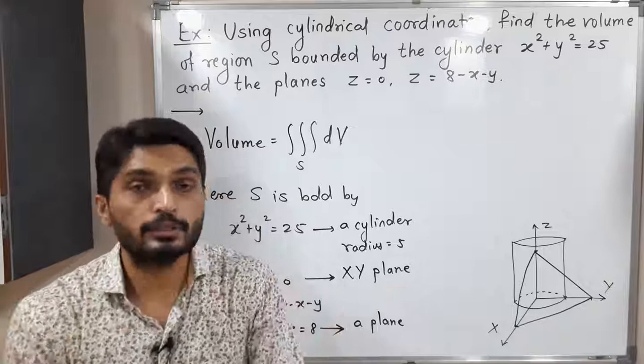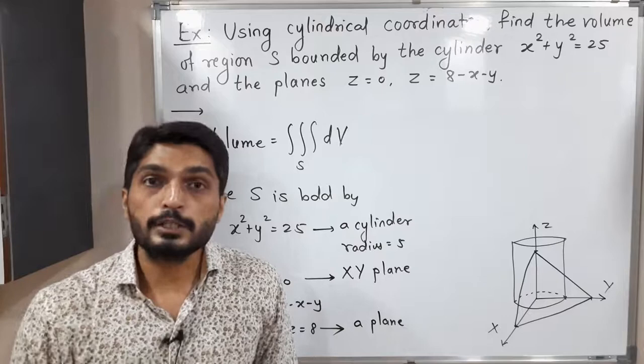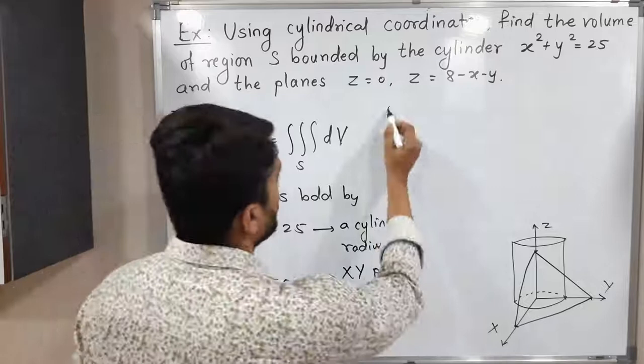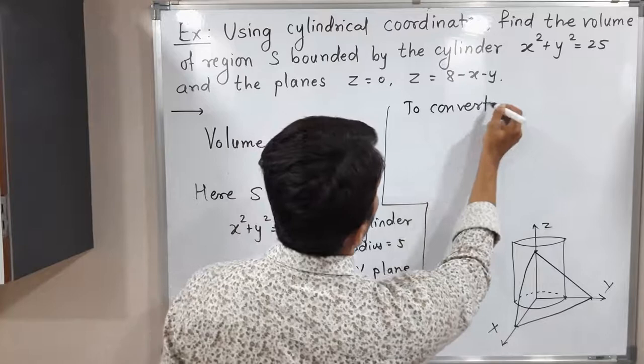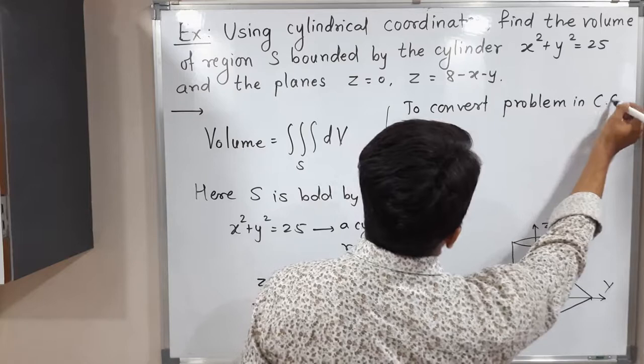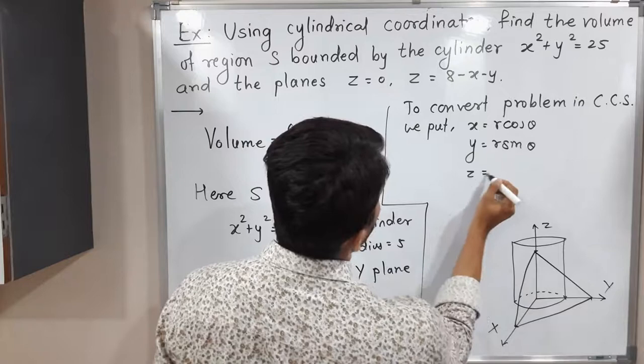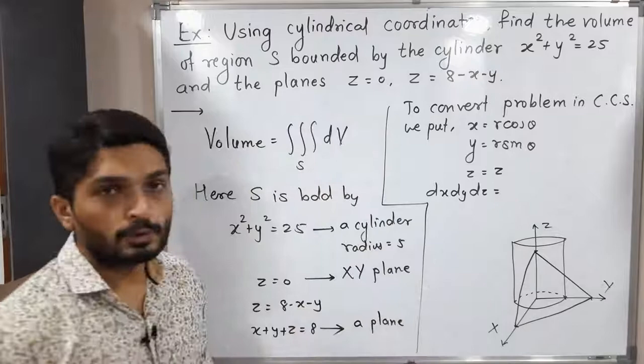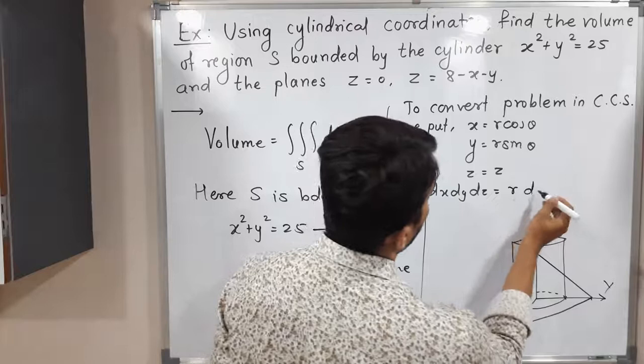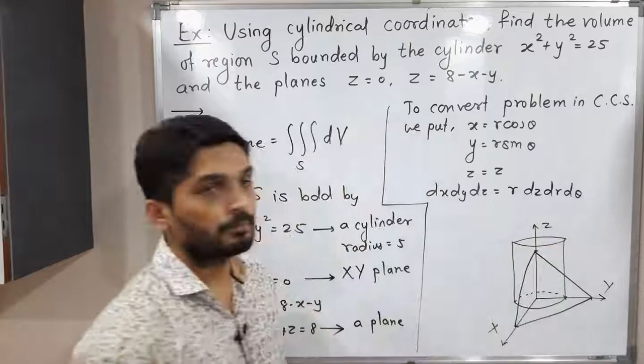The region is bounded by the xy-plane, the cylinder, and the cross plane. We solve this problem by converting to the cylindrical coordinate system. The substitution is: x = r cosθ, y = r sinθ, and z = z. When we use this substitution, the Jacobian is r, so dx dy dz becomes r dz dr dθ.